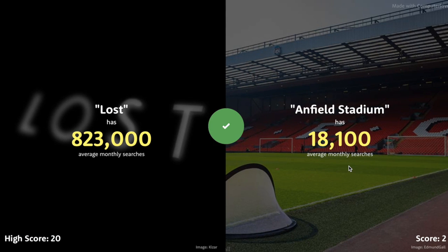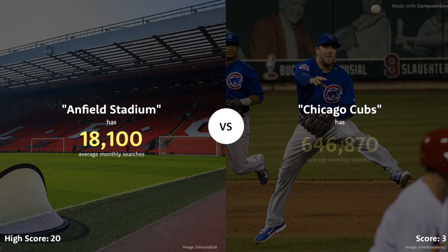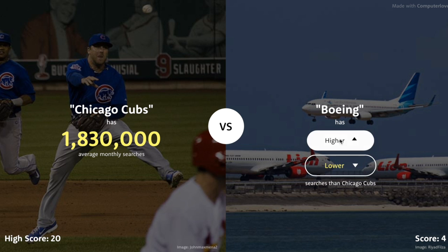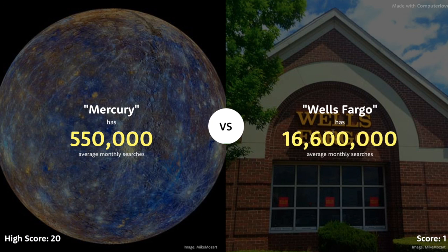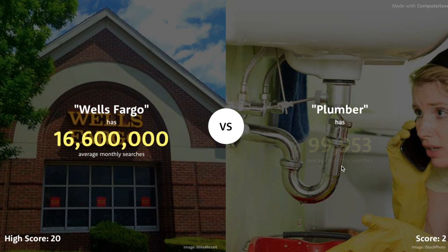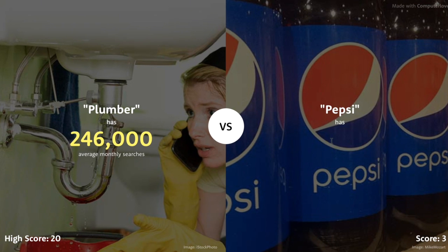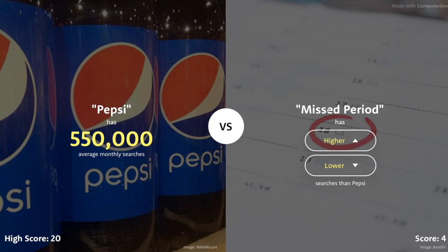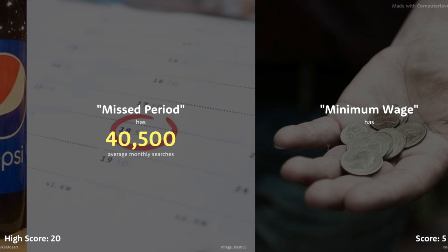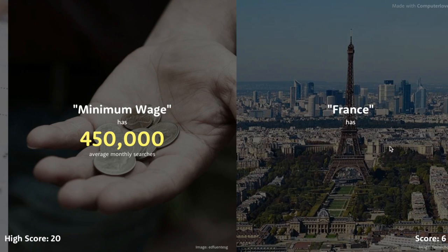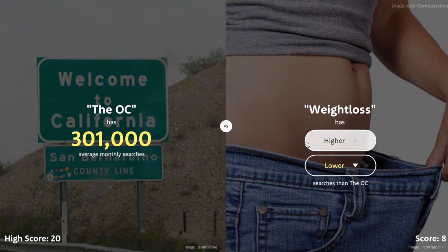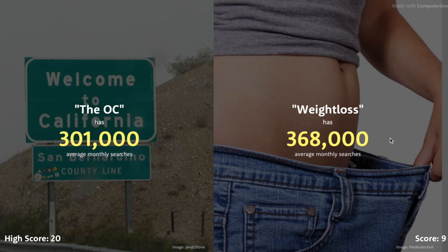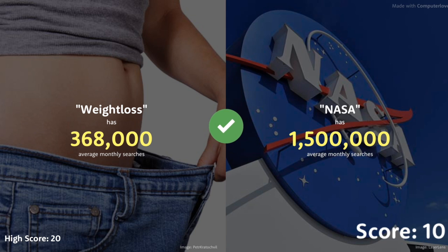Harley Davidson has to be higher than Austria. 2.2 million for Harley Davidson. Lost — lower than Harley Davidson. 823,000. Anfield Stadium — lower. Only 18,000 — see, stadiums don't get any searches. Chicago Cubs — higher than that for sure. Boeing has to be higher than 1.8 million. Mercury — lower than Arsenal. Wells Fargo has to be higher than Mercury. 16.6 million searches! Plumber — definitely lower, people do not search Plumber 17 million times a month. Pepsi definitely higher than Plumber — wow, not by a lot though. Missed Period — definitely lower. 40,000 for that. Minimum Wage has to be higher. 450,000. France has to be higher though — wow, only 1.2 million, I was expecting more.